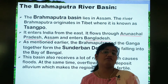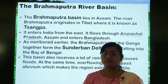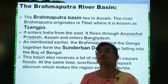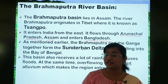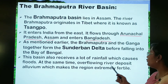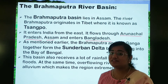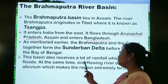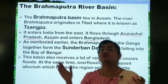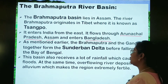Iske wajah se wahaan par kaafi floods bhi hote hai. If the rain comes in a systematic manner, farming can be done well there. But overflowing rivers deposit alluvium — the minerals which make the soil fertile — which makes the region extremely fertile and good for agriculture purposes.